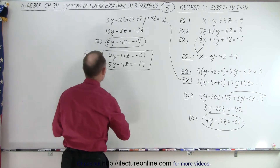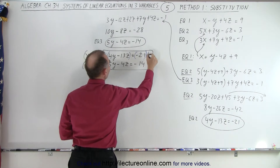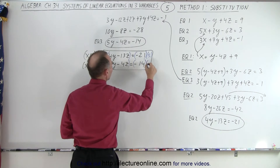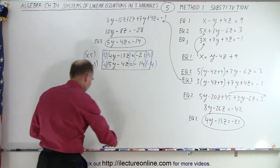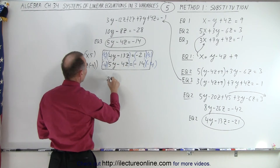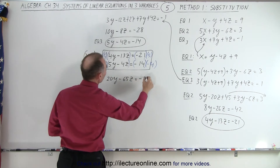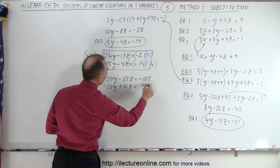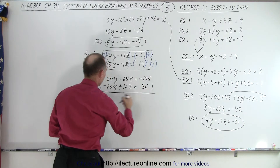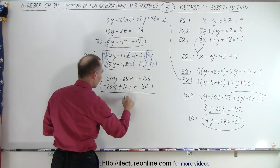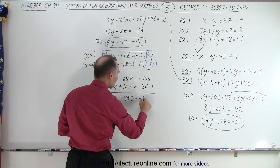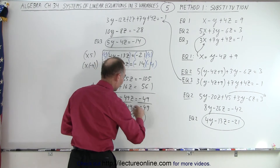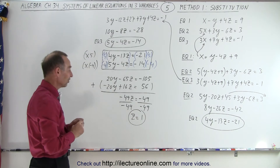Multiplying the left and right sides of equation two by 5 gives 20y minus 65z equals minus 105. Multiplying equation three by negative 4 gives minus 20y plus 16z equals positive 56. Remember, we have to do exactly the same to both sides of the equation. When we add the two equations together, the y's drop out. Minus 65z plus 16z gives minus 49z equals minus 49. Dividing both sides by minus 49, we get z equals 1. We found our first of the three variables.